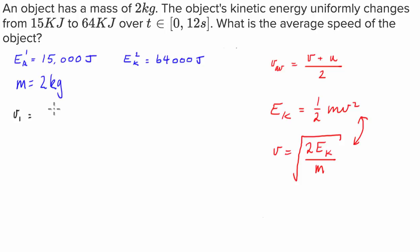is going to equal 2 times 15,000 divided by 2, and we square root the entire thing. And that will give us an answer of 122.47 meters per second.